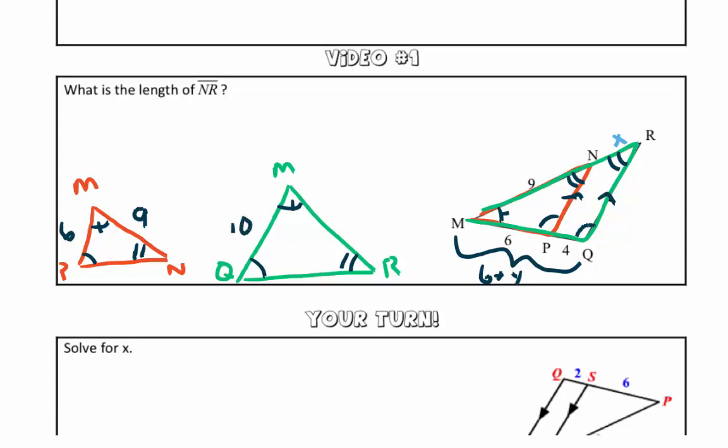And then MR is the entire length from M to R. So we have 9 plus X.